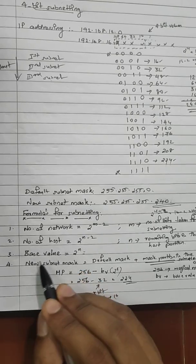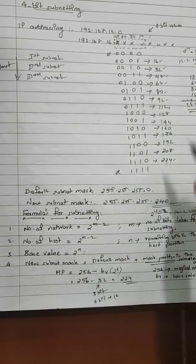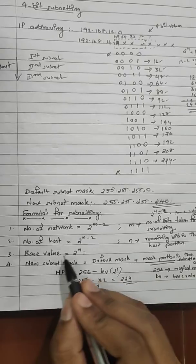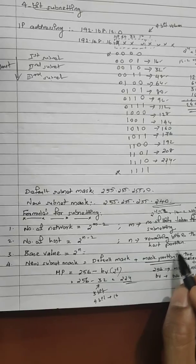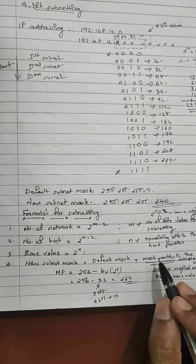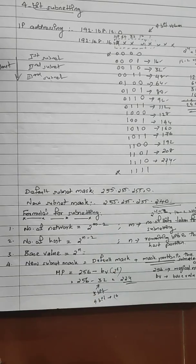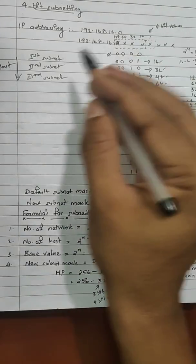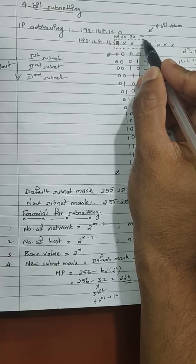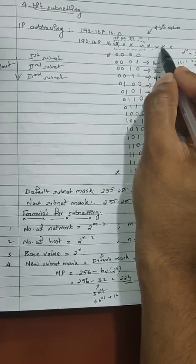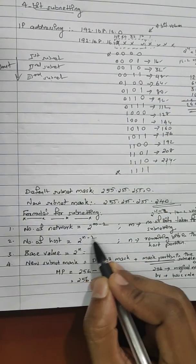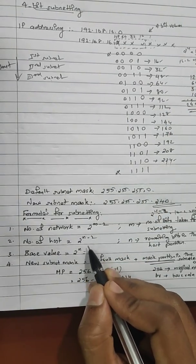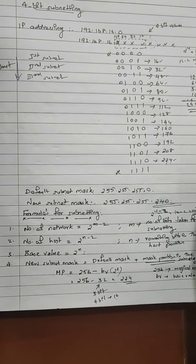The second formula is: number of hosts per subnet equals 2 raised to n minus 2, where n is the remaining bits in the host position. For 4-bit subnetting, the remaining host bits are 4, so 2 raised to 4 minus 2 equals 14. The base value is 2 raised to n. For 4-bit subnetting, the base value is 2 raised to 4, which equals 16.